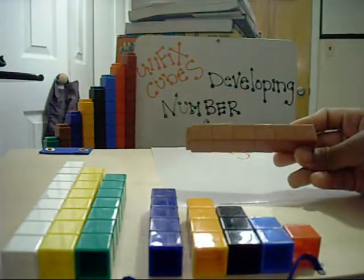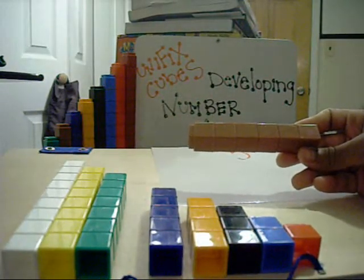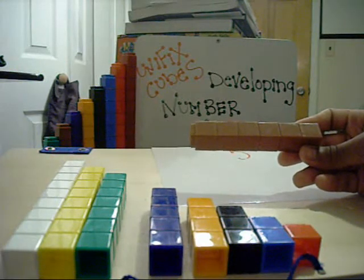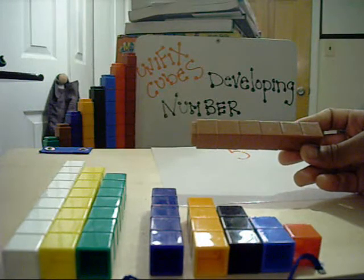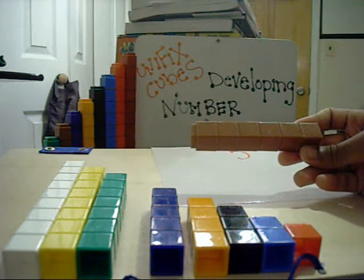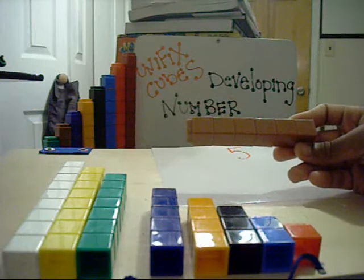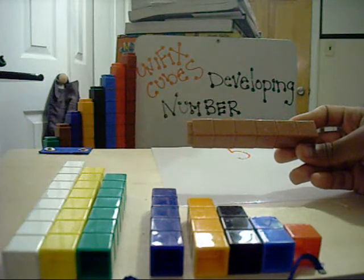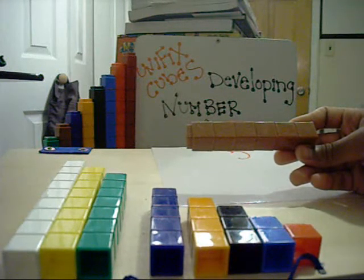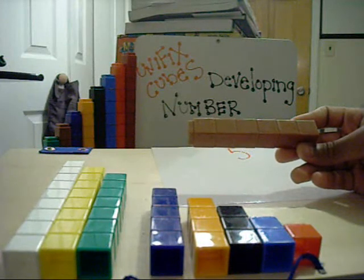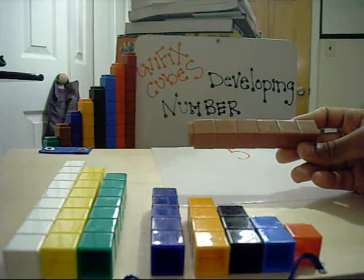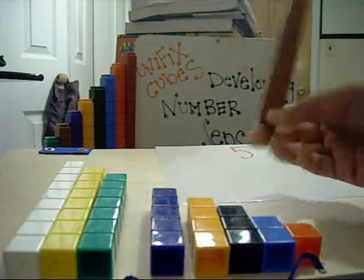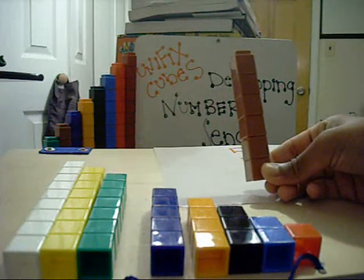A lot of times with younger students or students who don't have this fluidity with numbers and the ability to take them apart and put them back together, they tend to view numbers as very rigid blocks and they can't develop generalizations and relationships between numbers. So for the number 6, they might be able to see it might be 5 plus 1, but usually they just represent the value as that name value of 6.